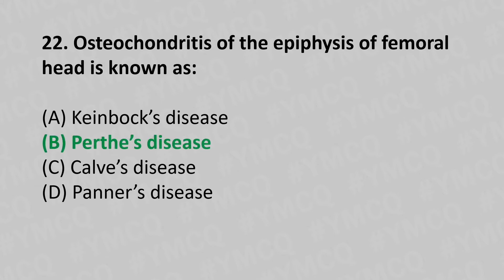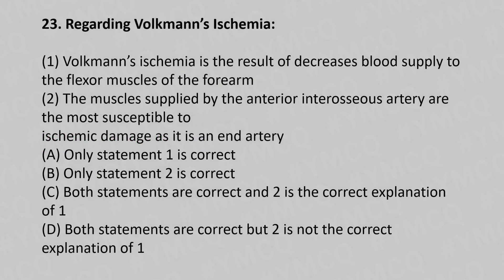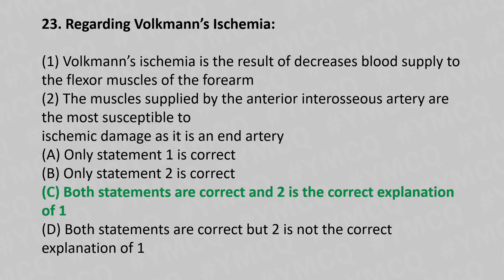Moving to our 23rd question. Regarding Volkmann's ischemia: Statement 1 — Volkmann's ischemia is a result of decreased blood supply to the flexor muscles of the forearm. Statement 2 — The muscles supplied by the anterior interosseous artery are most susceptible to ischemic damage as it is an end artery. Option A, only statement 1 is correct. Option B, only statement 2 is correct. Option C, both statements are correct and statement 2 is the correct explanation of statement 1. Option D, both statements are correct but statement 2 is not the correct explanation. And the answer is Option C.